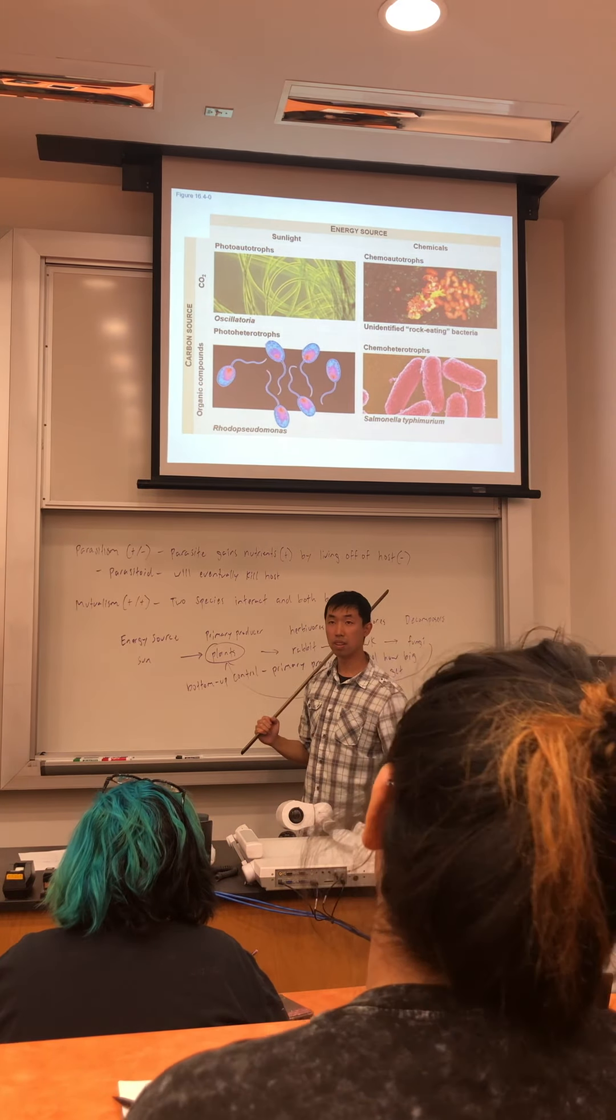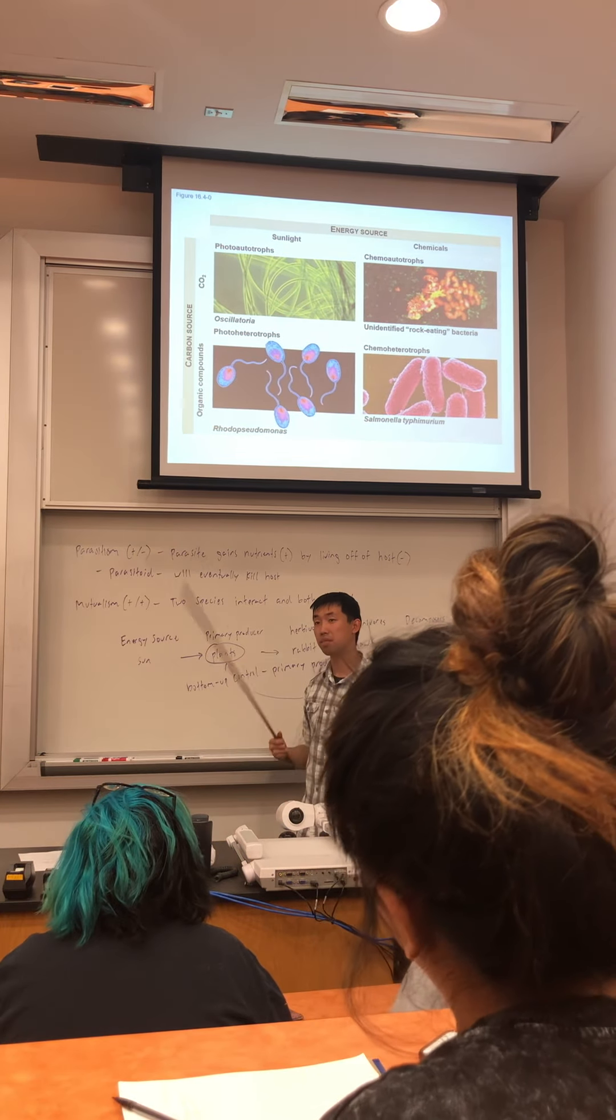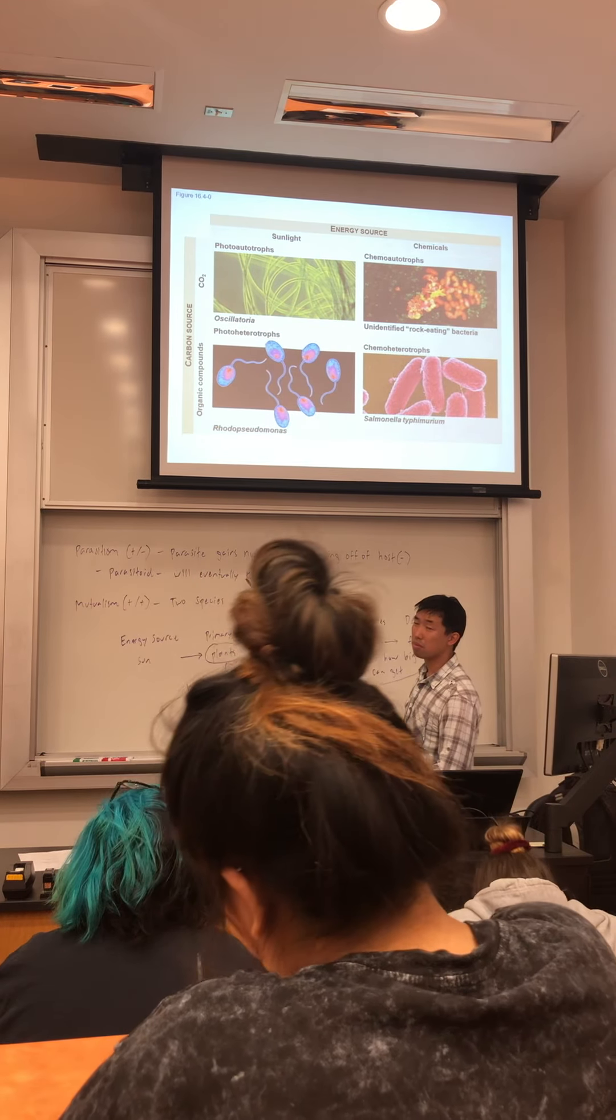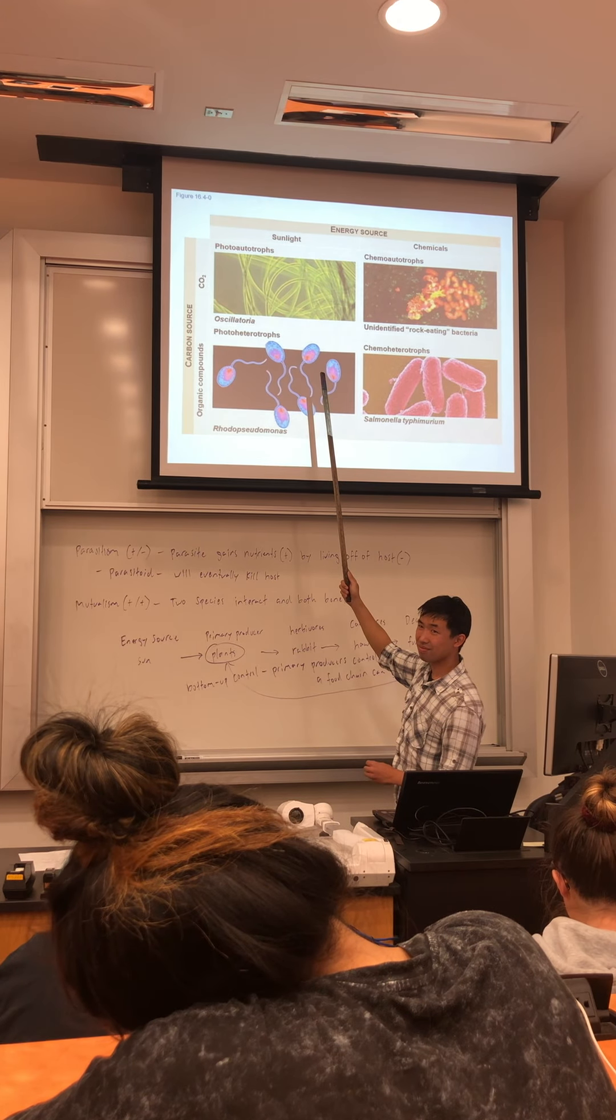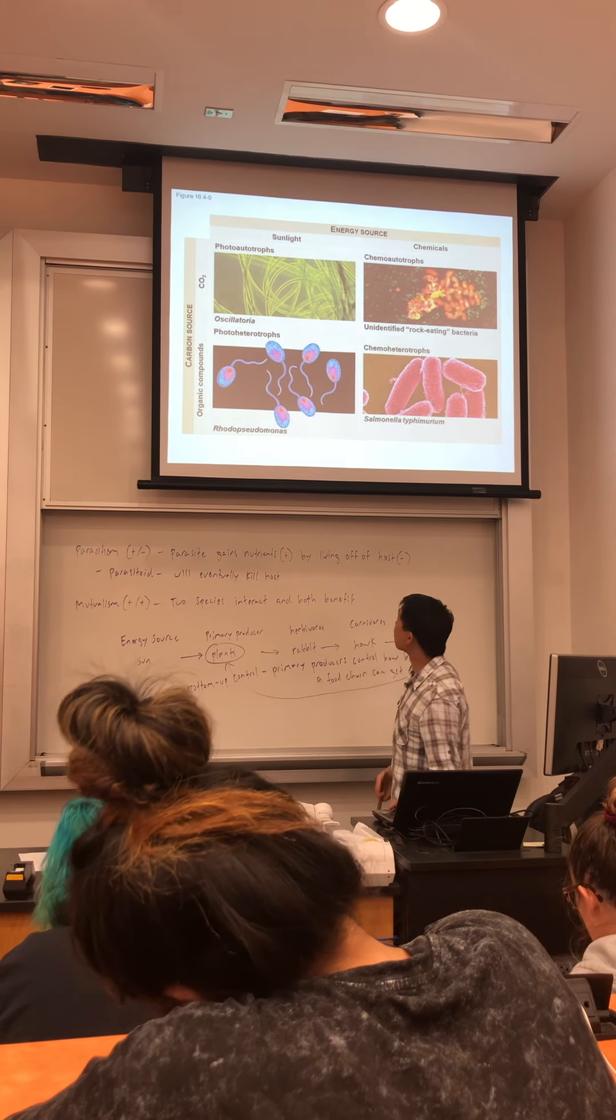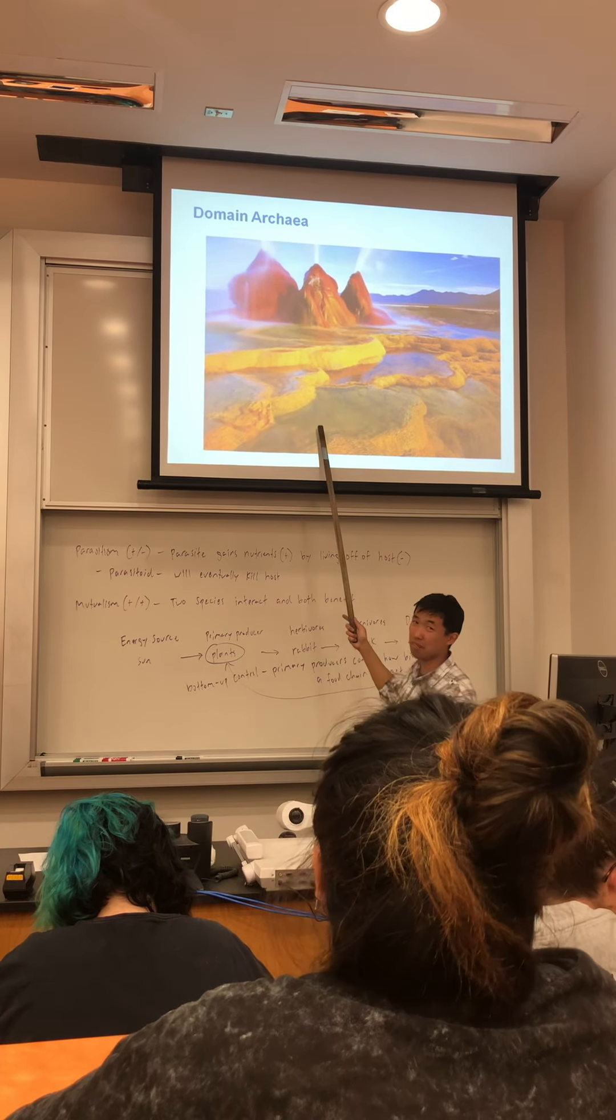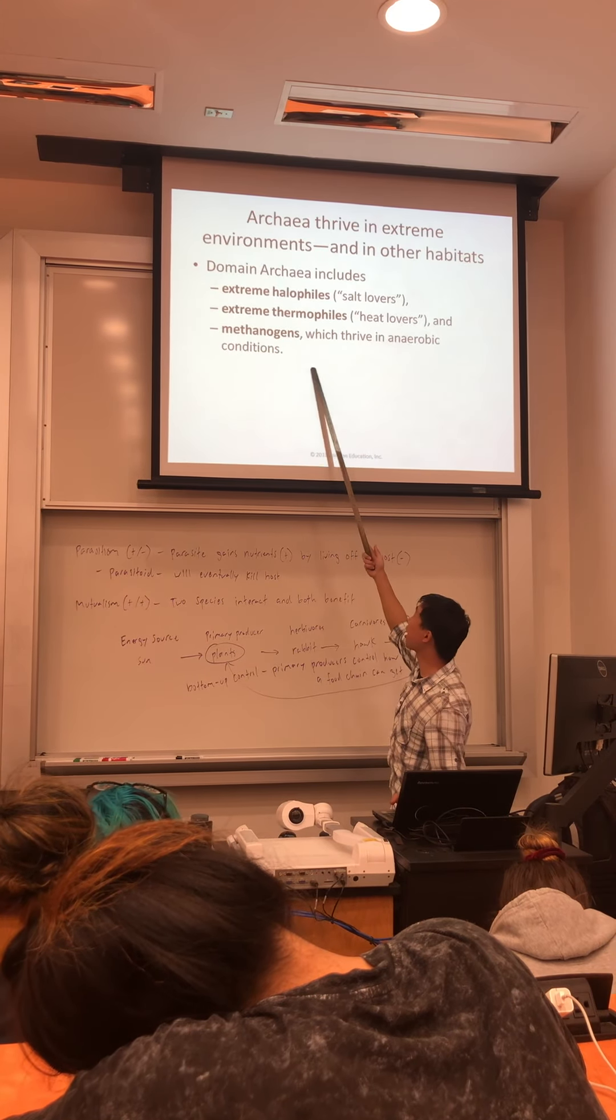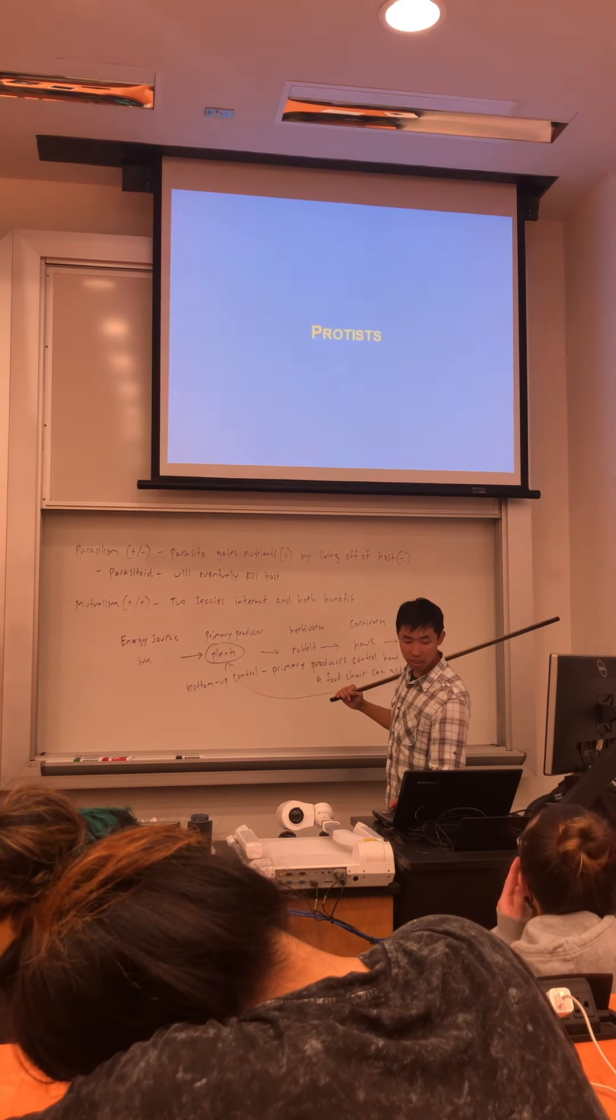The organisms that live off the deep sea vents are the chemo-autotrophs. These are called nutritional modes. I will know the four major categories of nutritional modes. Know in general what kind of environment archaea are found in. Are those the extremophiles? Yes, those are the extremophiles. Just know that archaea are most likely found in very extreme environments.